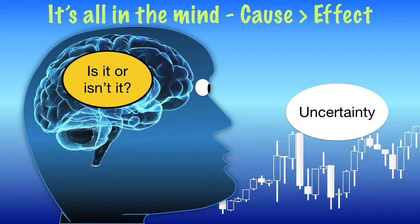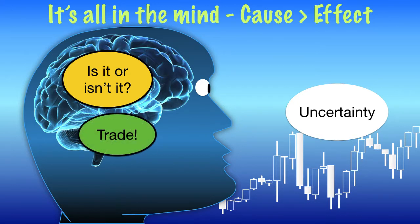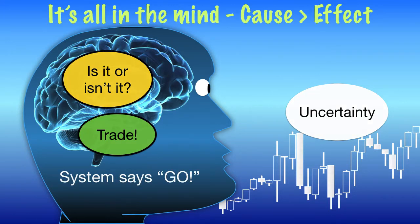At this stage we've got a choice — we can take the trade or we can wait. If the scenario on our charts meets the criteria for a trade according to our system, this is when we must trade. If we wait until we see things more clearly, then the chances are that the opportunity at hand has gone. There may be another opportunity just around the corner, but the opportunity that presents itself right now has gone.